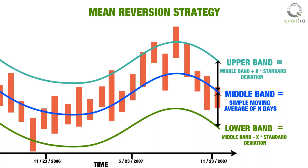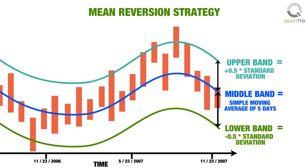Here n is the look-back period to compute mean and standard deviation, and x is the entry threshold — these are three parameters to be optimized using a training data set. For the mean reversion strategy on AUDCAD in the next unit, we will take n as 5 and x as 0.5.